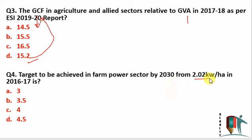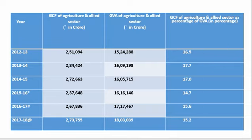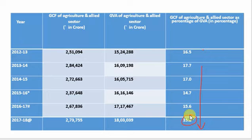Question 4: Target to be achieved in the farm sector by 2030, from 2.02 kilowatt per hour. The target for 2030 is around four kilowatt per hectare, so option C is right. You can see that gross capital formation has declined from 17.7 percent in 2013-14 to around 15.2 percent in 2017-18. This is a dismal figure; capital formation should increase so that agriculture can be mechanized and developed.